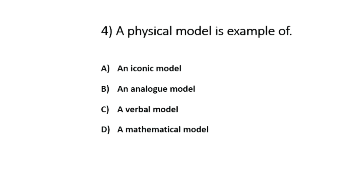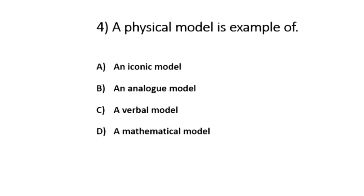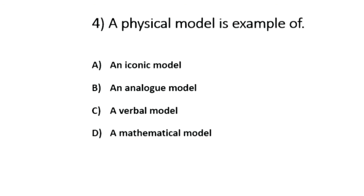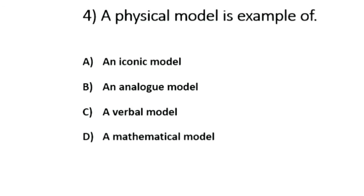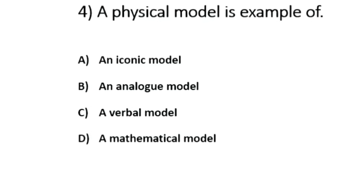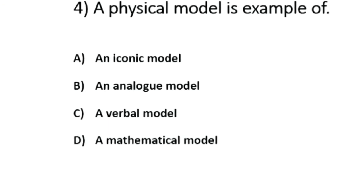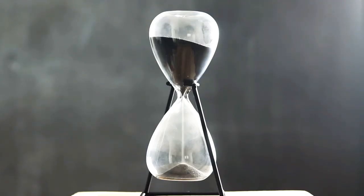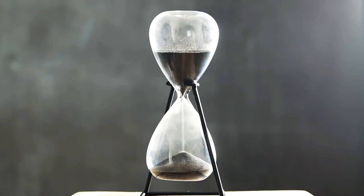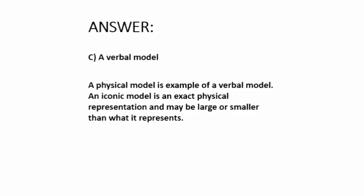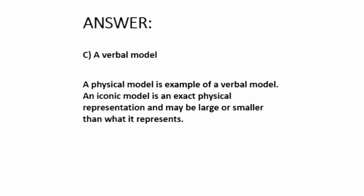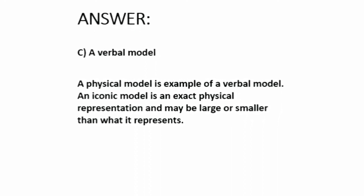Question number 4. A physical model is an example of — the options are: option A, an iconic model; option B, an analog model; option C, a verbal model; option D, a mathematical model. The answer is option C: a verbal model.